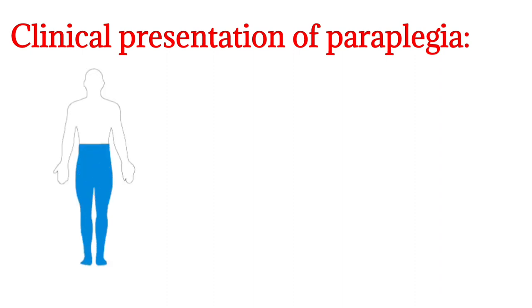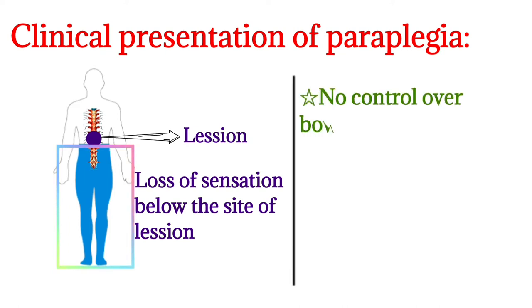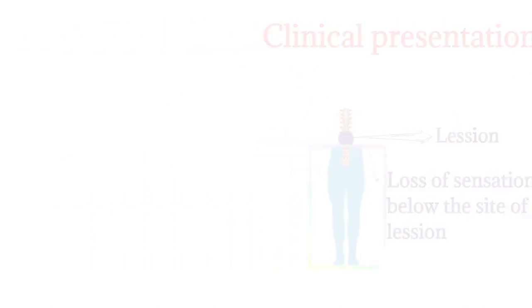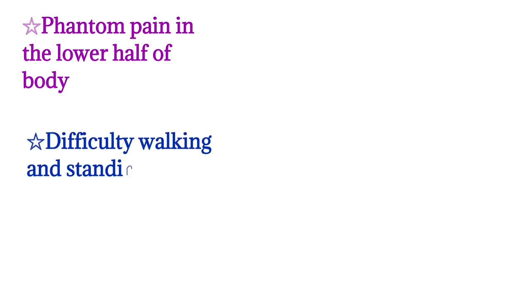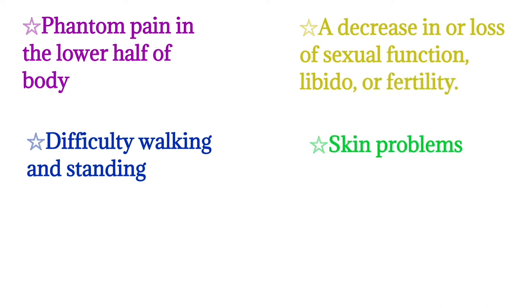The clinical presentation of paraplegia includes lesions and loss of sensation below the site of the lesion, and no control over bowel and bladder activities. Other features include phantom pain in the lower half of the body, difficulty walking and standing, decreased sexual function, libido or fertility, and skin problems.